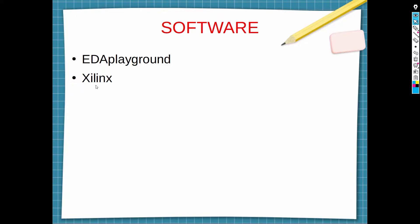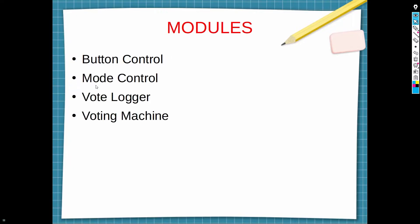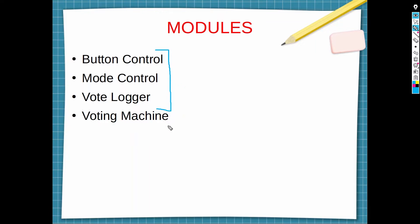This program consists of four modules: button control, mode control, vote logger, and voting machine. These three modules are combined to create the voting machine module, which is ultimately what we are trying to implement. While making these modules there are certain parameters that we must keep in mind.